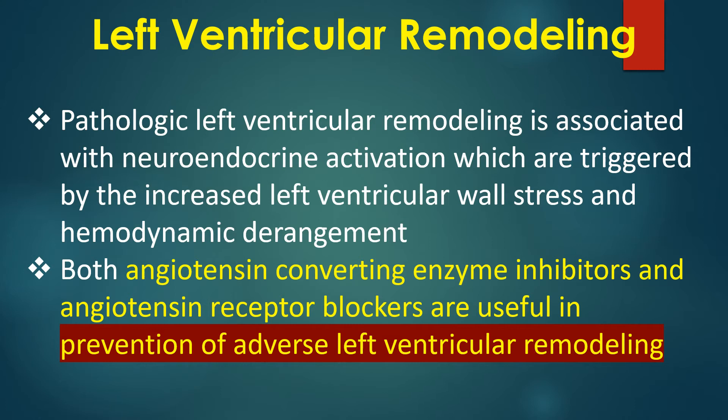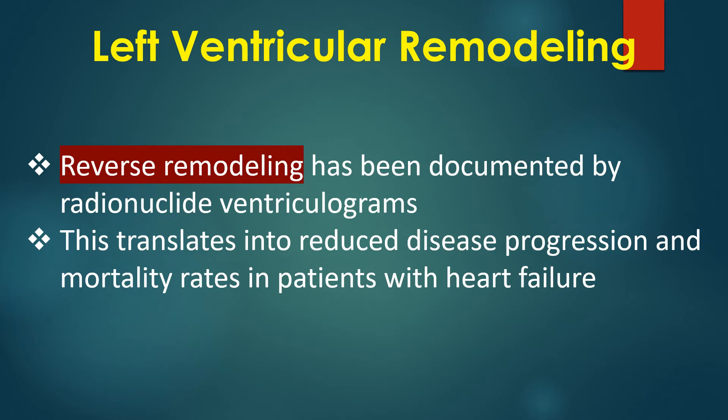Pathologic left ventricular remodeling is associated with neuroendocrine activation, which is triggered by increased left ventricular wall stress and hemodynamic derangement. Both angiotensin converting enzyme inhibitors and angiotensin receptor blockers are useful in prevention of adverse left ventricular remodeling. Reverse remodeling has been documented by radionuclide ventriculograms, and this translates into reduced disease progression and mortality rates in patients with heart failure.